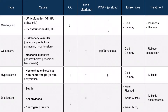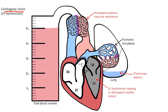Here is a table summing up the most important features of the four types of shock. The first type we're going to discuss is cardiogenic shock. In cardiogenic shock, there's an intracardiac cause that leads to pump failure. We can essentially subdivide cardiogenic shock into left ventricular and right ventricular dysfunction. Causes of left ventricular dysfunction include myocardial infarction, heart failure, or arrhythmia.